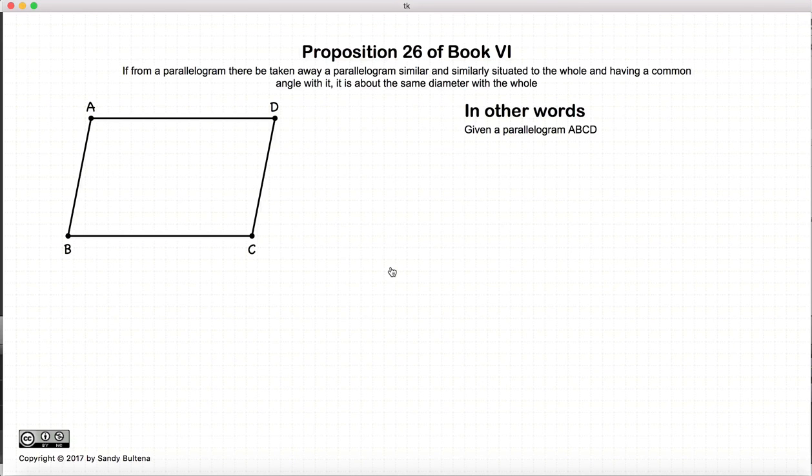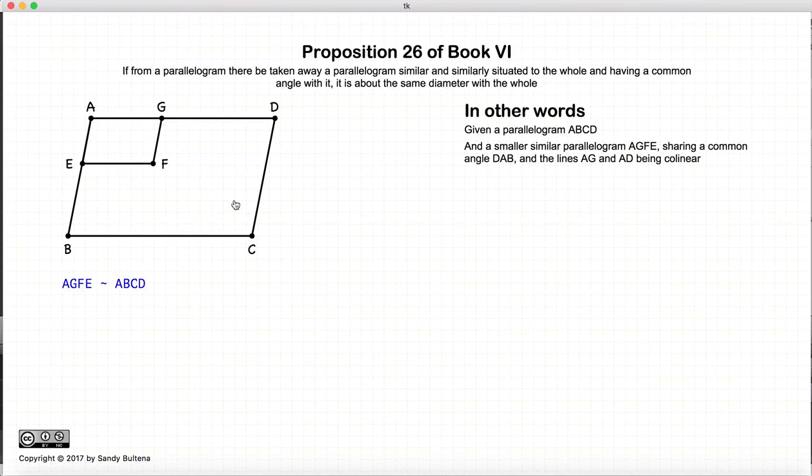In this proposition we start with a simple parallelogram and we draw another parallelogram making sure that the angles are equal and that the two vertices are on the same spot. This proposition states that if we have these two parallelograms then the diagonal or the diameter of the parallelogram AEFG will be collinear with the diameter of ABCD.